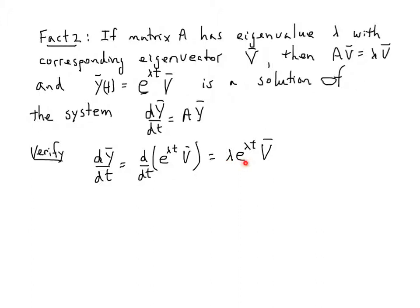Lambda and e to the lambda t are both scalars. They're both real numbers. It doesn't matter what order I multiply them in. And so, I'm going to commute them and say it's e to the lambda t times lambda v. That's legitimate. I'll even put some parentheses around this. And as I look up above, I see that lambda times v is the same as the matrix A times v. So that's good. And I'm going to replace that.